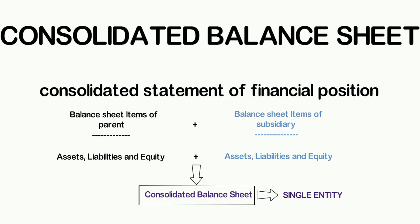During consolidation, one thing should be kept in mind: the consolidated balance sheet is being prepared as a single entity. Considering this rule, some items of individual financial statements are reported on the face of the consolidated balance sheet, some are not shown, and some new items are added. Now let us look at the items line by line that normally appear on individual balance sheets of parent and subsidiary.